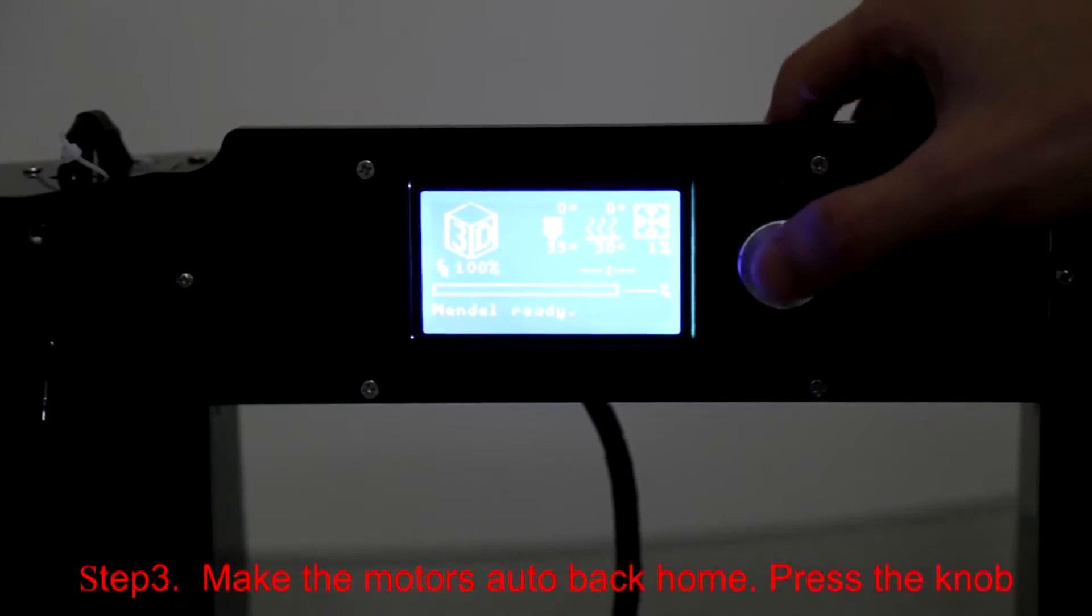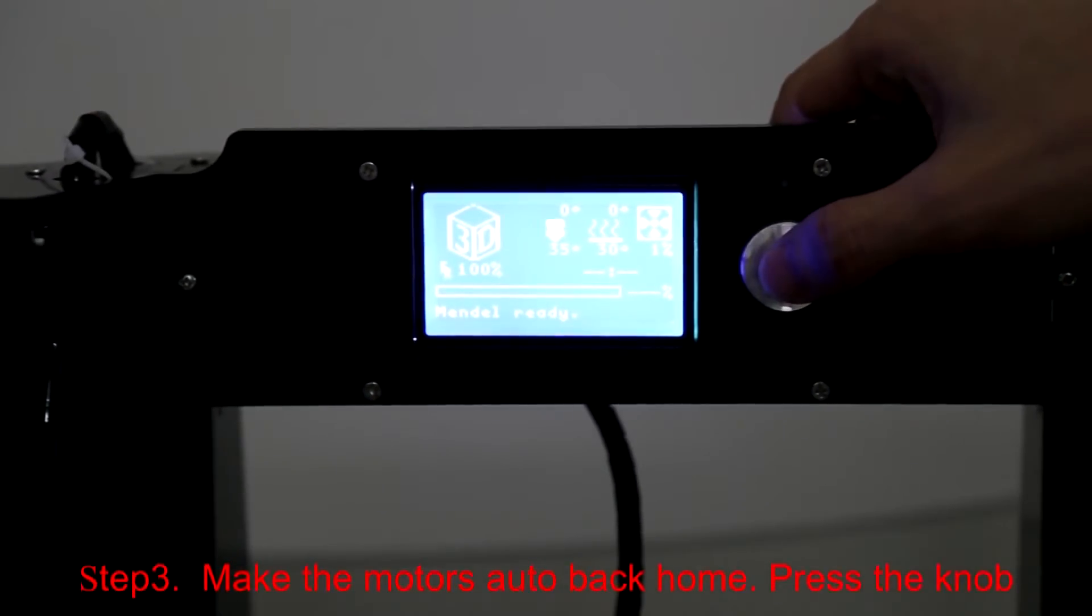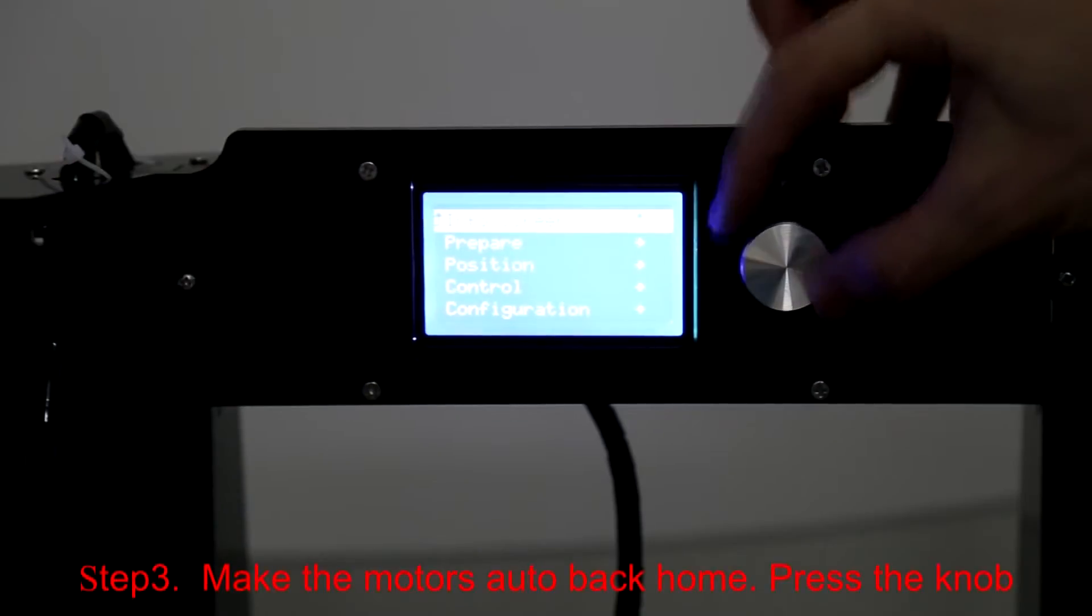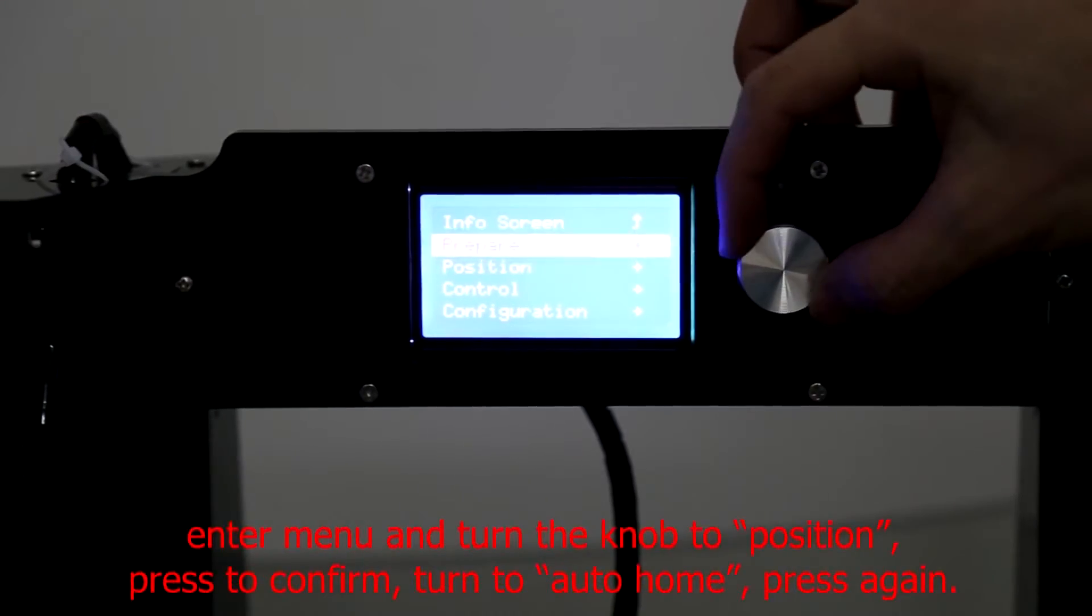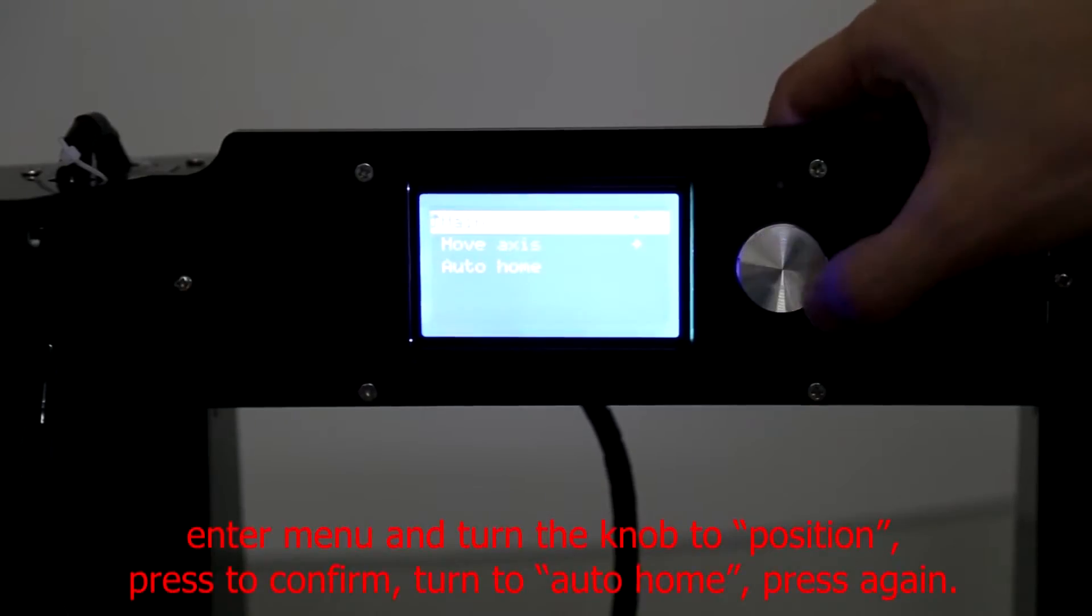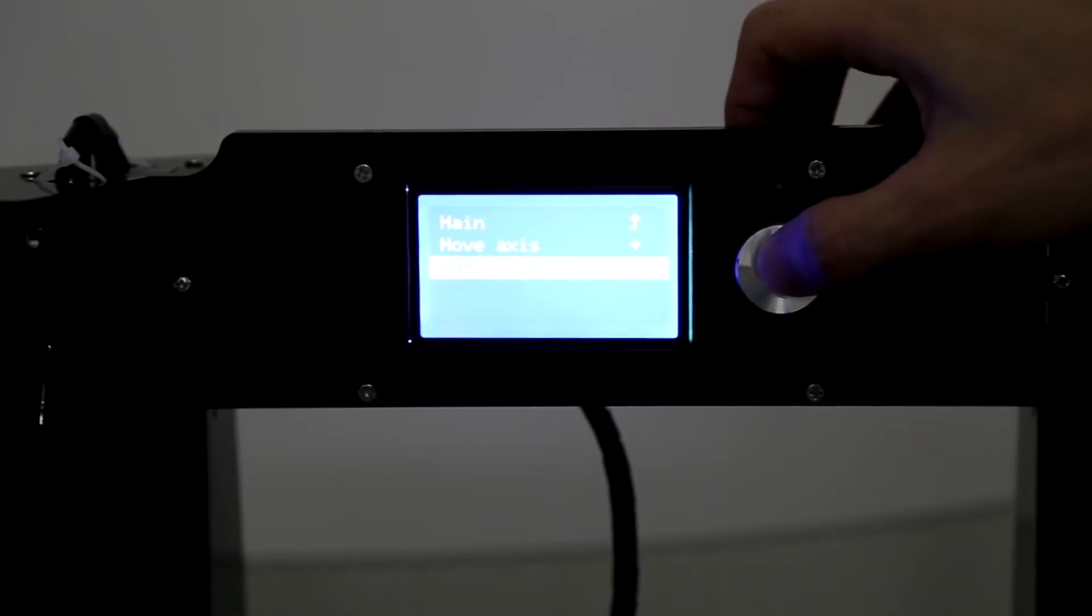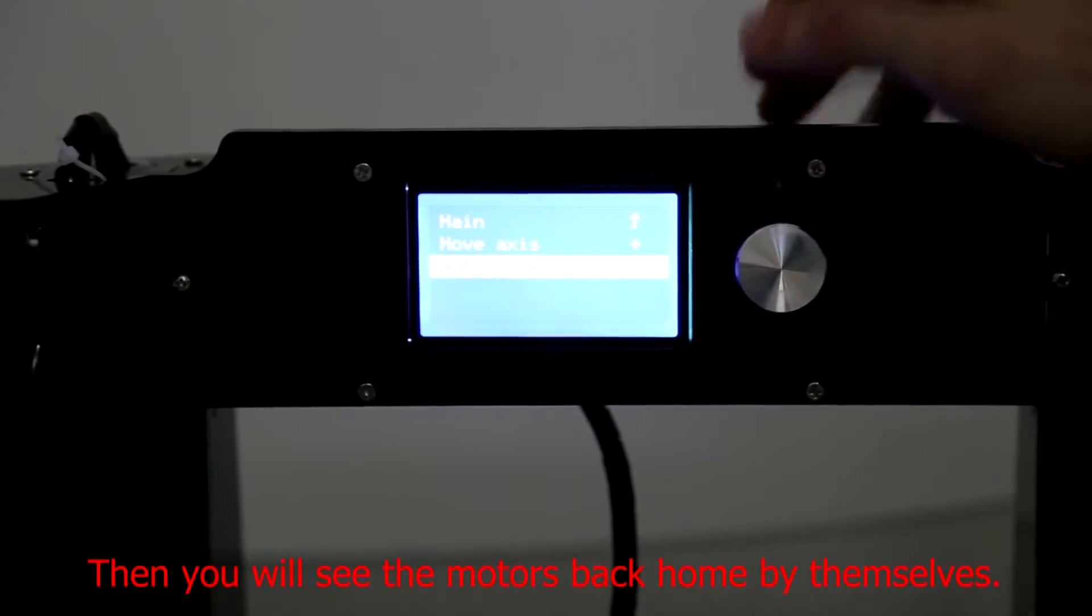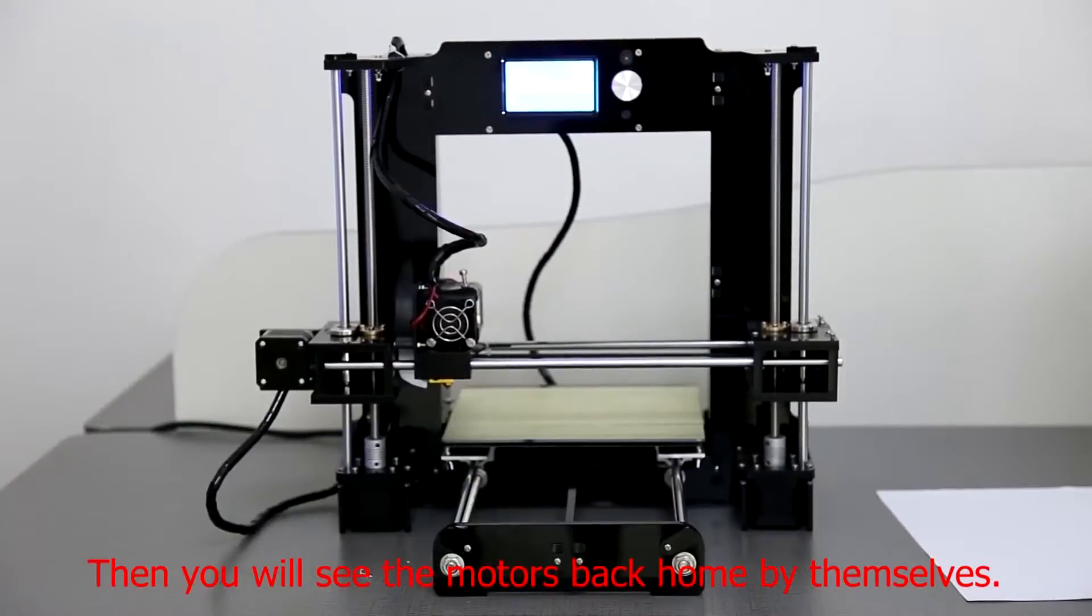Step 3: Make the motors auto home. Press the knob to enter the menu and turn the knob to Auto Home. Press to confirm, then turn to Disable Motors and press again. You will see the motors home by themselves.